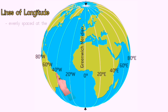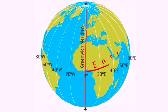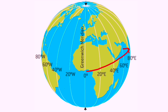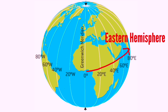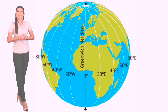Longitude is measured in degrees from the prime meridian. Lines of longitude are evenly spaced at the equator but meet at the poles. Lines of longitude are numbered east from the prime meridian to the 180 degree line, and west from the prime meridian to the 180 degree line.